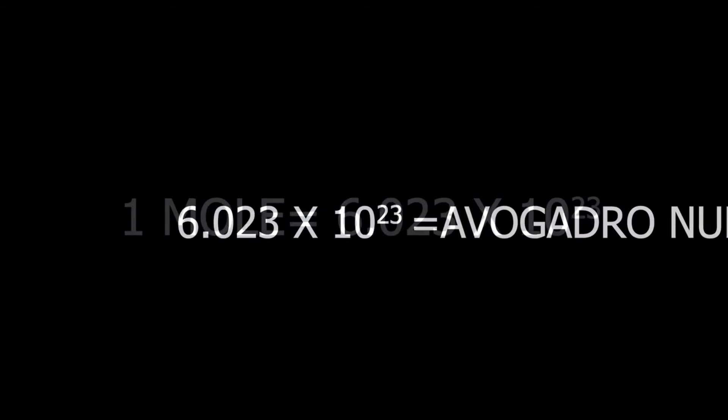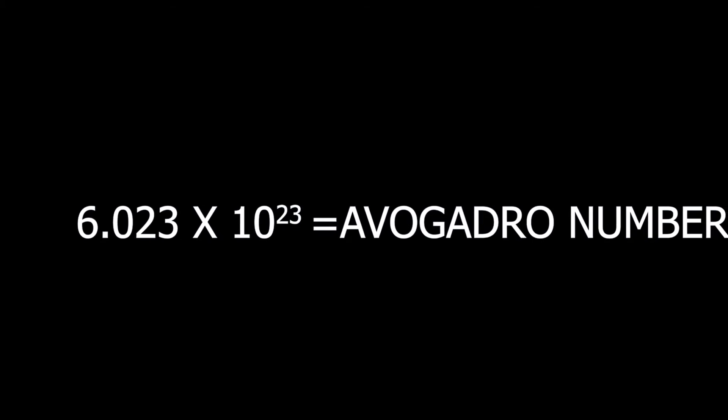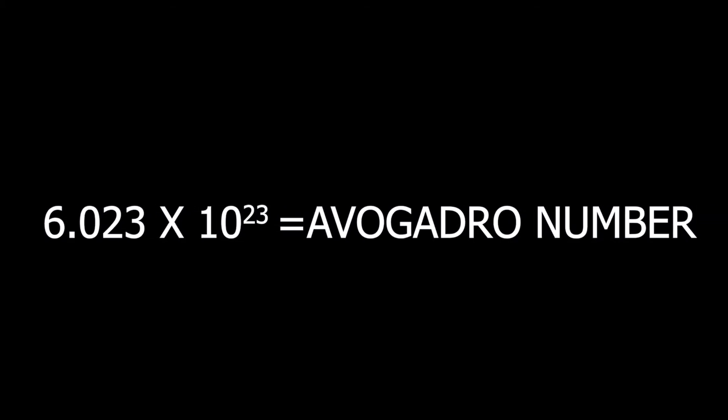One mole equals 6.023 by 10 to the power 23 entities. 6.023 by 10 to the power 23 is also called Avogadro number.